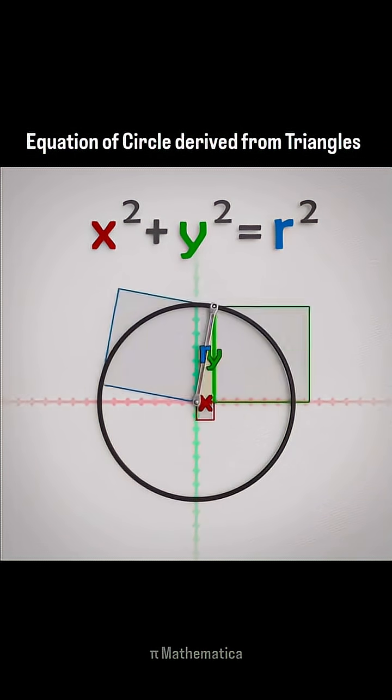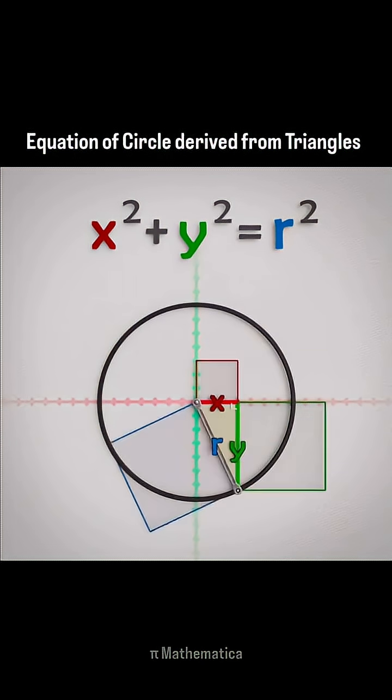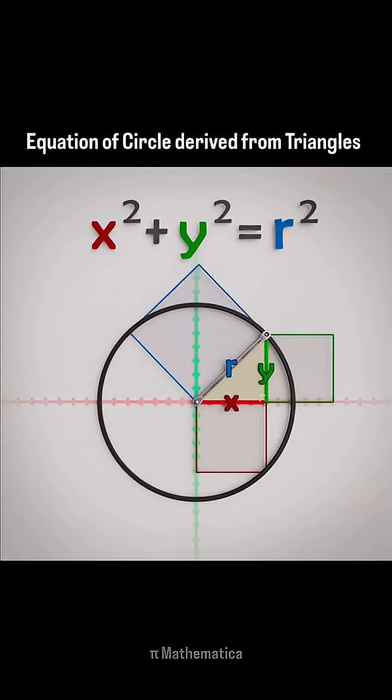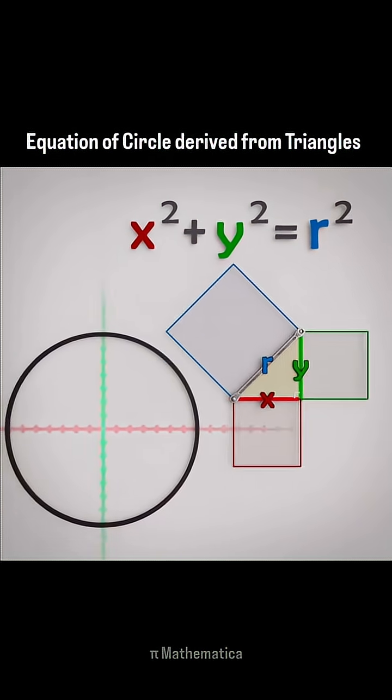So, this tweaked version of the Pythagorean Theorem can also describe how to trace out a point in a circle. Instead of locking down the center of the circle at the origin, we could shift it horizontally or vertically.